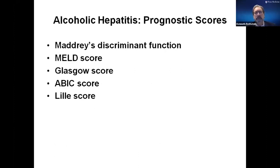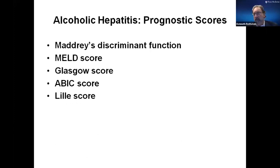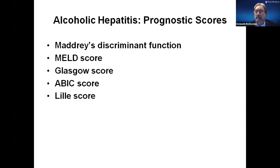These are the prognostic scores we use. Maddrey's discriminant function involves the prothrombin time and the bilirubin. We all know about the MELD score. The Lille score gives us prognosis after someone has been on seven days of therapy with steroids. In the old days, you'd give patients 28 days of steroids with the inherent risk of infection, but now we know within seven days if it's going to work. If it works, we continue for a full course; if not, we stop and move on to other options.